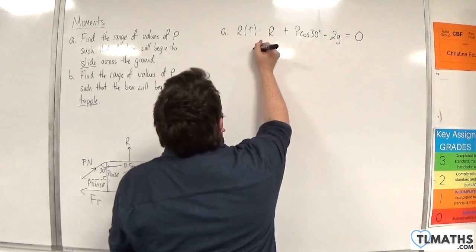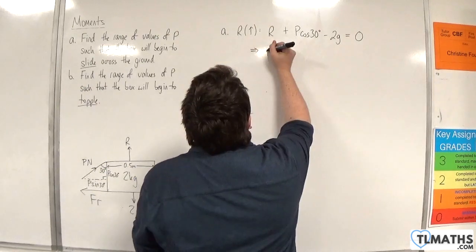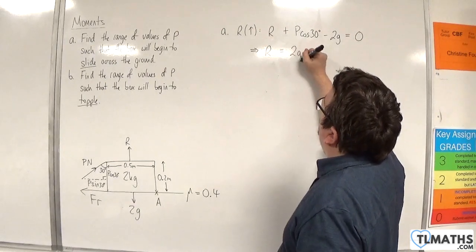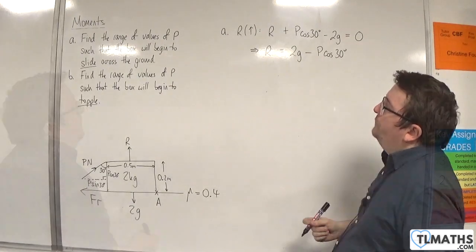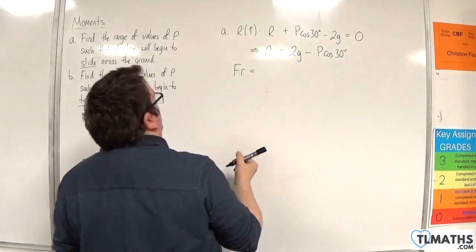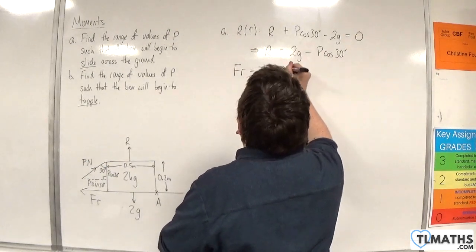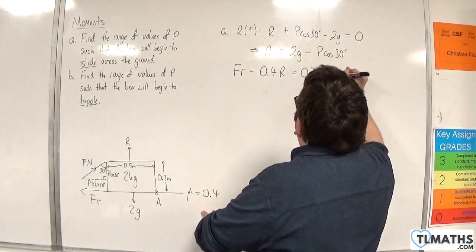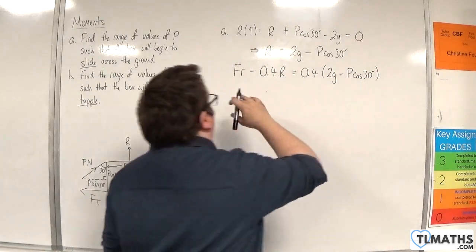That implies the normal reaction force is going to be equal to 2G minus P cosine 30. So now we can use that the friction is going to be equal to mu times R, so 0.4 times R, which is 0.4 times (2G minus P cosine 30). So that's the friction force.